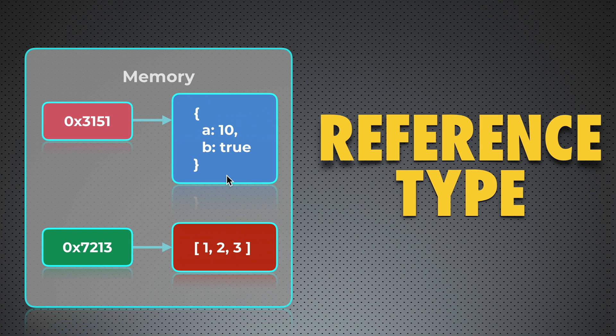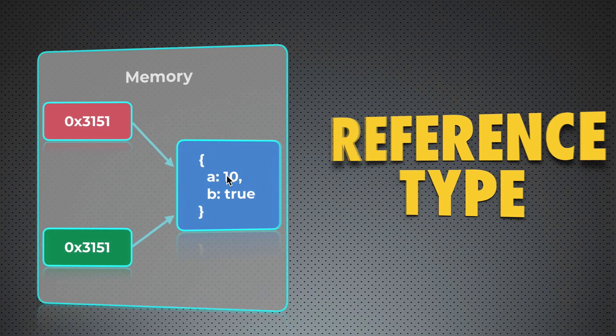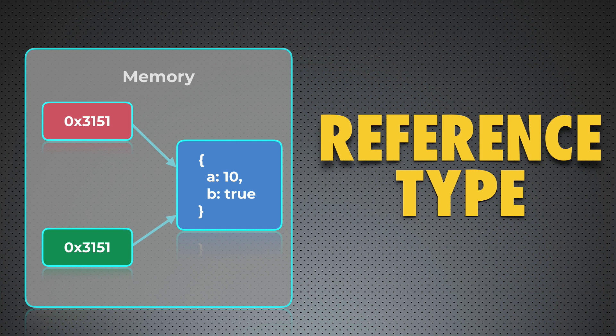But you may ask me, can it happen that different pointers point to the same value in the memory? And answer is yes. For reference type it is possible. In this example, two different pointers point to the same place in memory, where value of reference type is stored. And notice that those references in both pointers are the same. But colors of those two pointers are different. I made this on purpose, because pointers themselves are stored in different places in memory. But they hold same value.